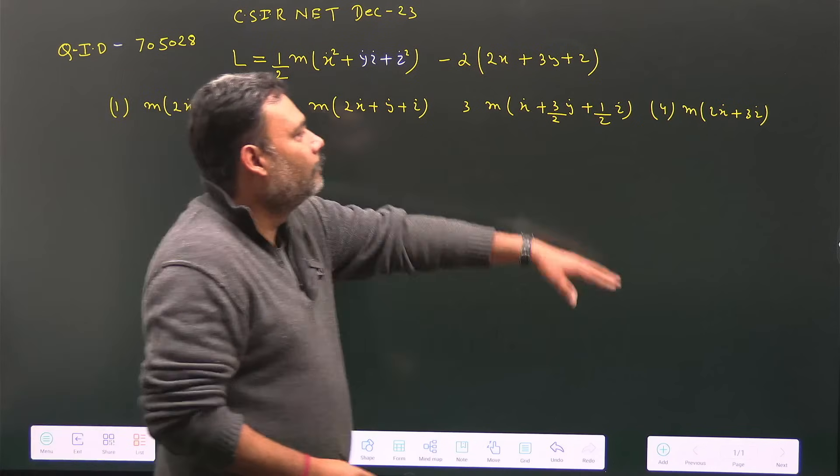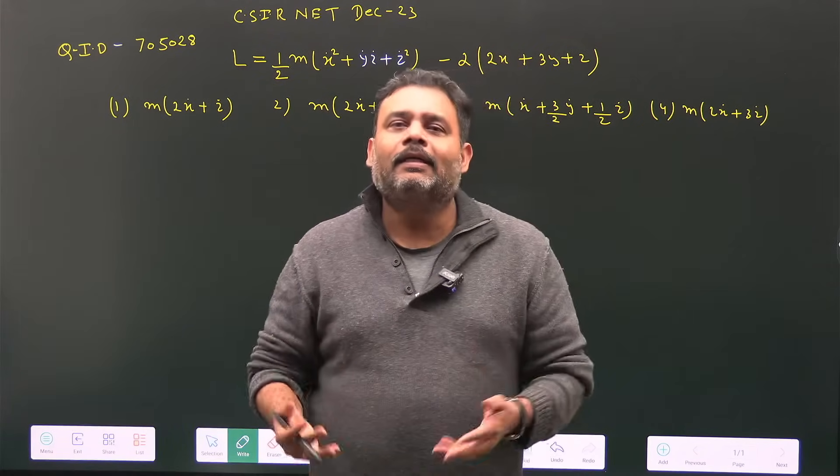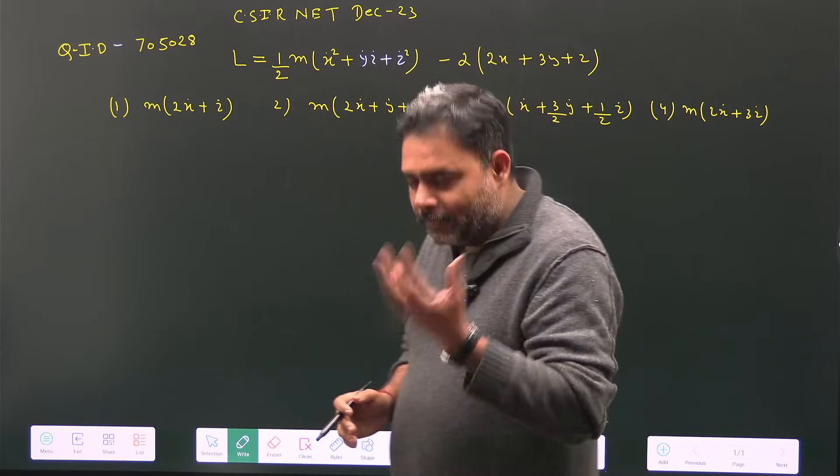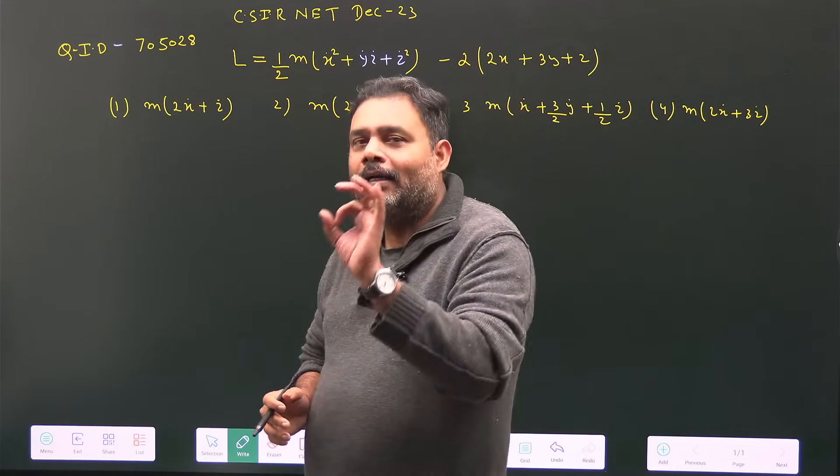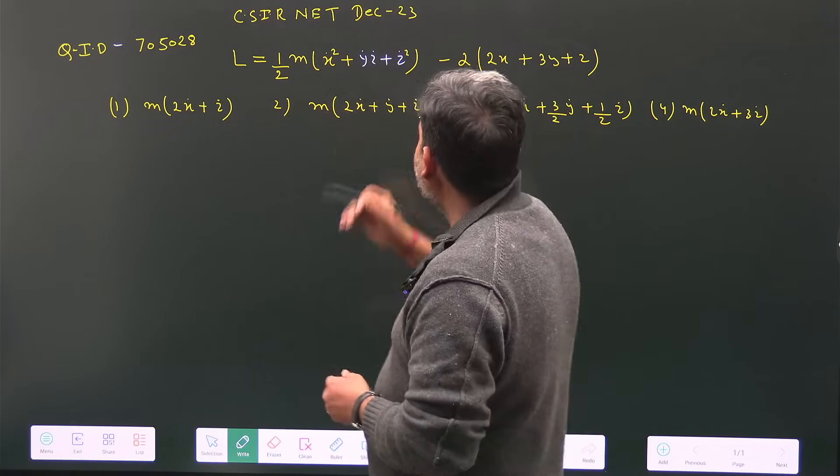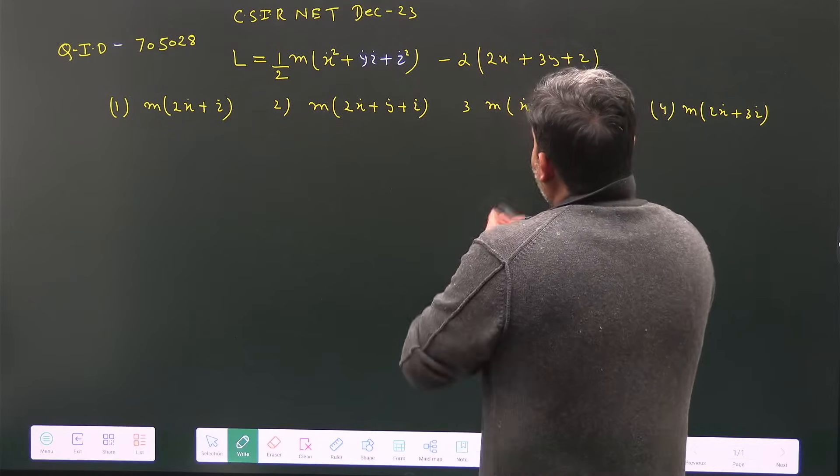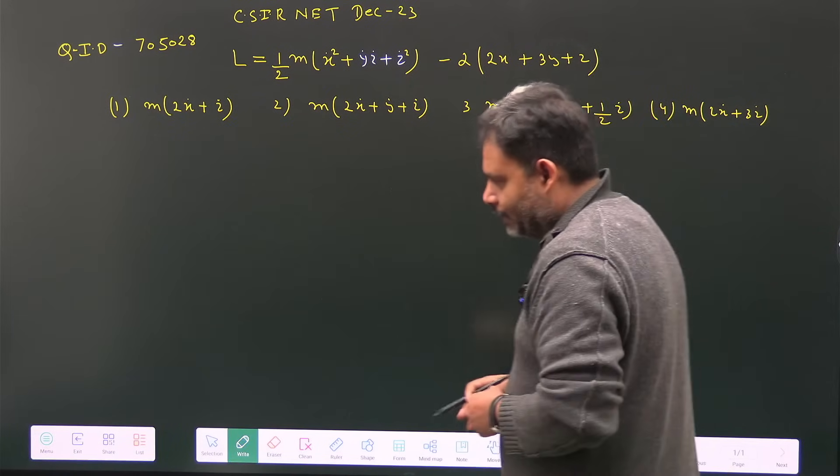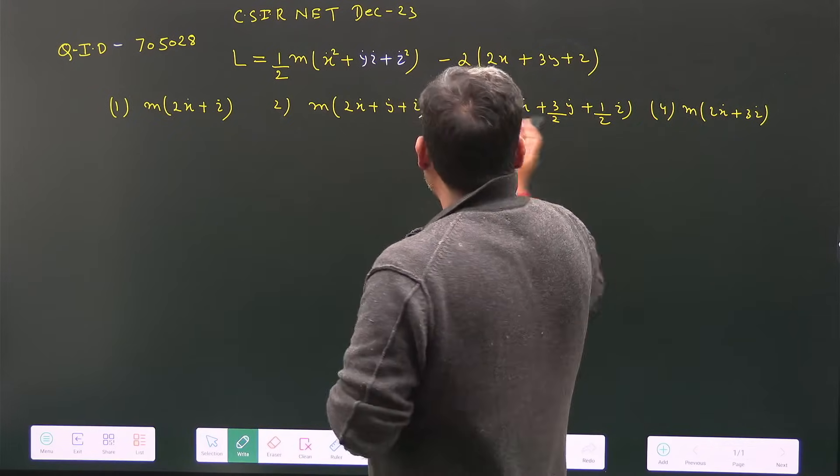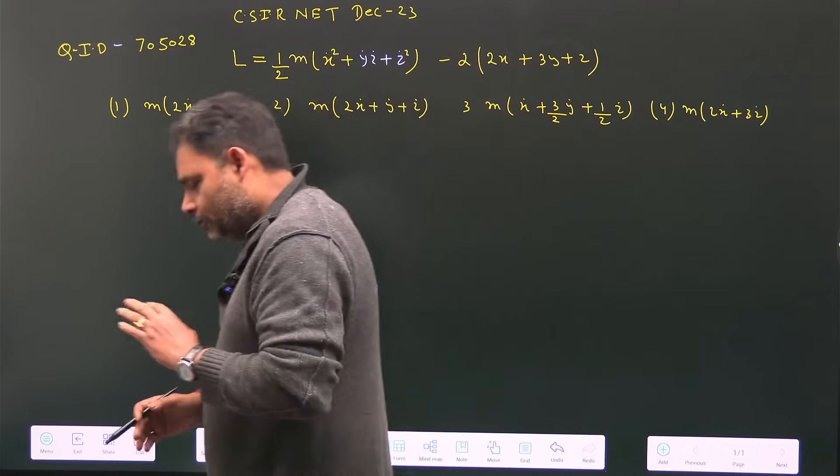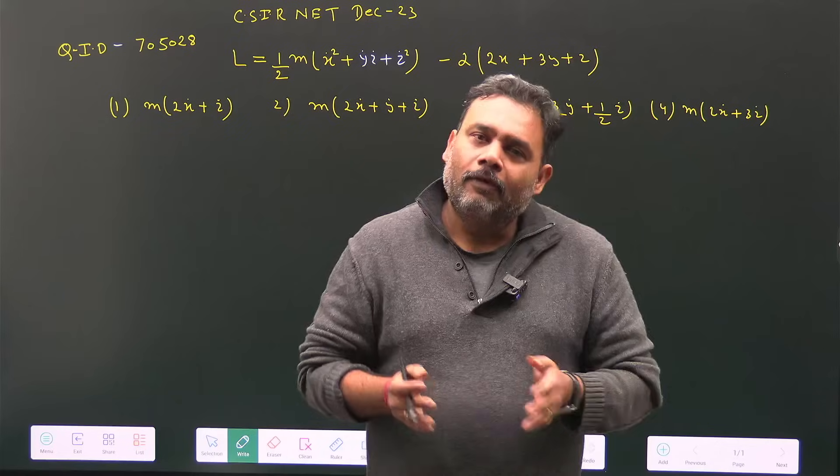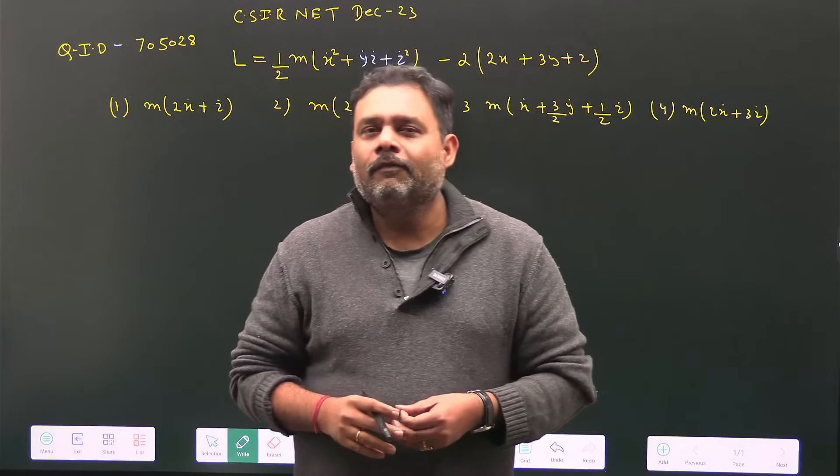First, for conservation laws, I can check for cyclic coordinates. But neither x, y, nor z is a cyclic coordinate, so this approach won't work.